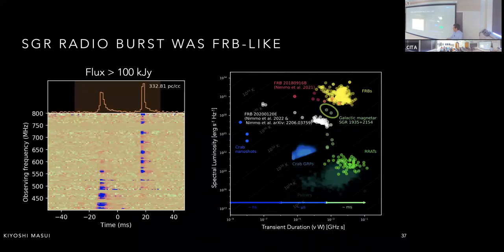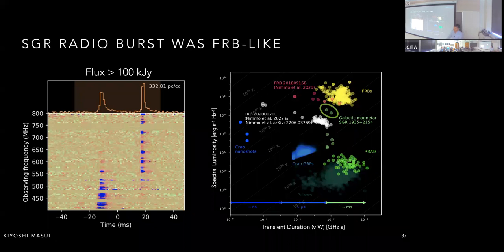The flux measurement was actually very challenging because SGR 1935+21 was 30 degrees outside our field of view — we caught it in a far sidelobe suppressed by a factor of a thousand compared to our boresight response. That far-sidelobe response is the origin of the grading structure visible in the data.